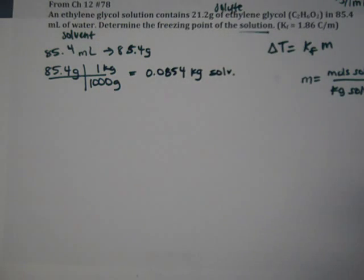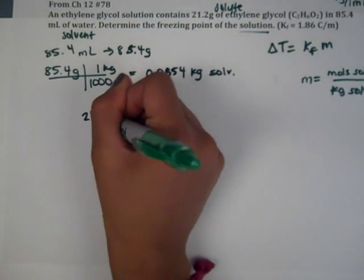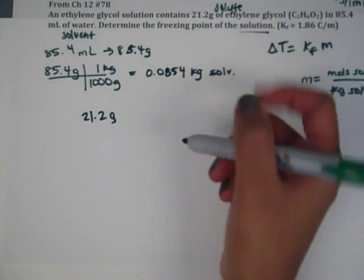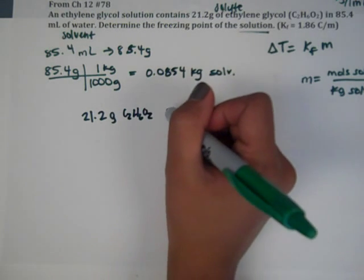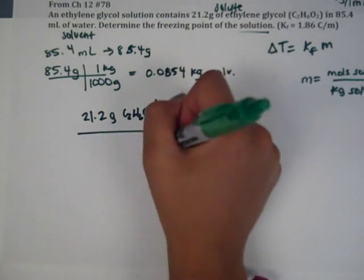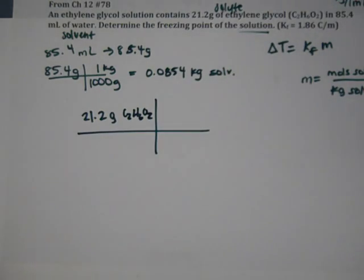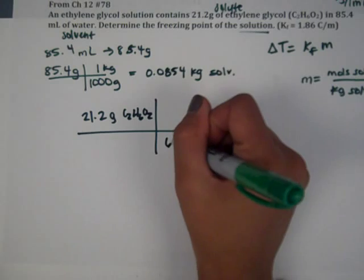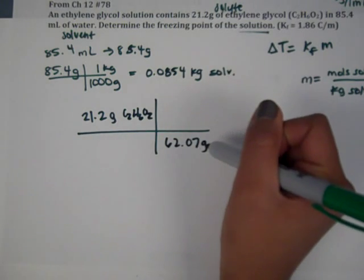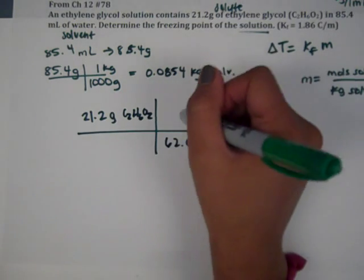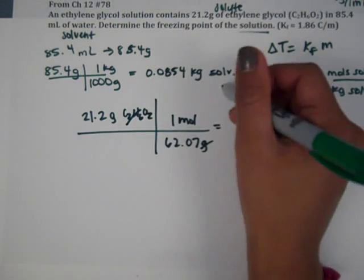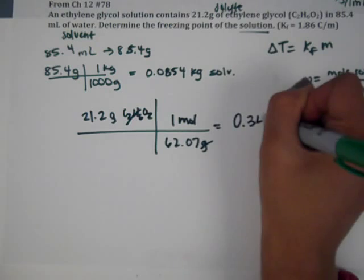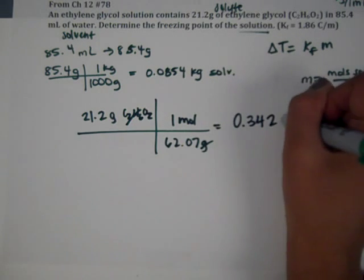Then we have moles of solute, and that is from the 21.2 grams of ethylene glycol, C2H6O2. And now we can convert that to moles with the molar mass of 62.07 in one mole. So we have about 0.342 moles.